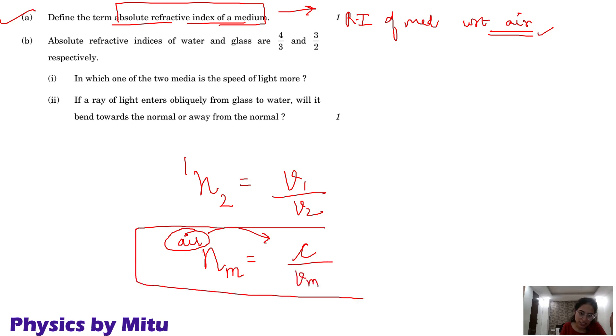So this is absolute refractive index. You can say it is ratio of speed of light in air to speed of light in that medium.